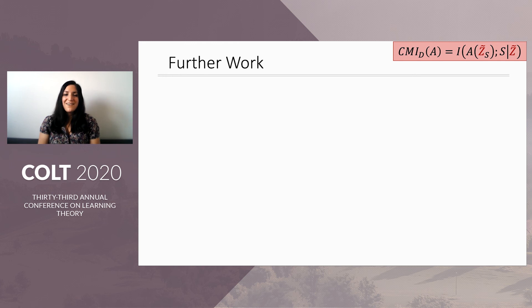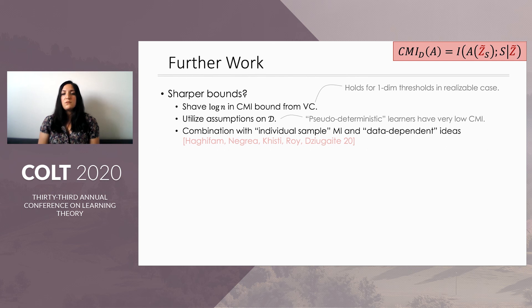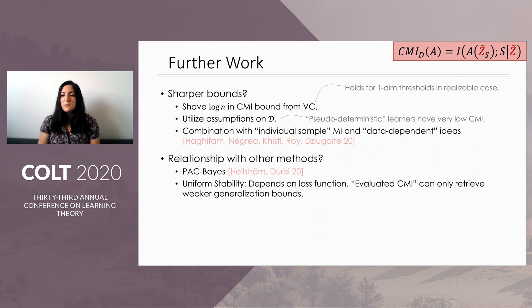There's quite a lot of points for further work. The first one would be to improve the existing CMI bounds. In particular, can we shave the log n from the VC bound? And we proved that this is true for one-dimensional thresholds in the realizable case, but we couldn't prove it in general. Another question would be, can we utilize assumptions on the distribution to get sharper bounds? And we also provide an example of that. And perhaps more importantly, can we combine the conditioning approach of CMI with other notions that improve on the mutual information framework? And actually, recent work has already demonstrated that this is possible. So a different direction would be to explore the relationship of CMI with other frameworks. So recent work extends our bounds to the PAC-Bayesian setting.